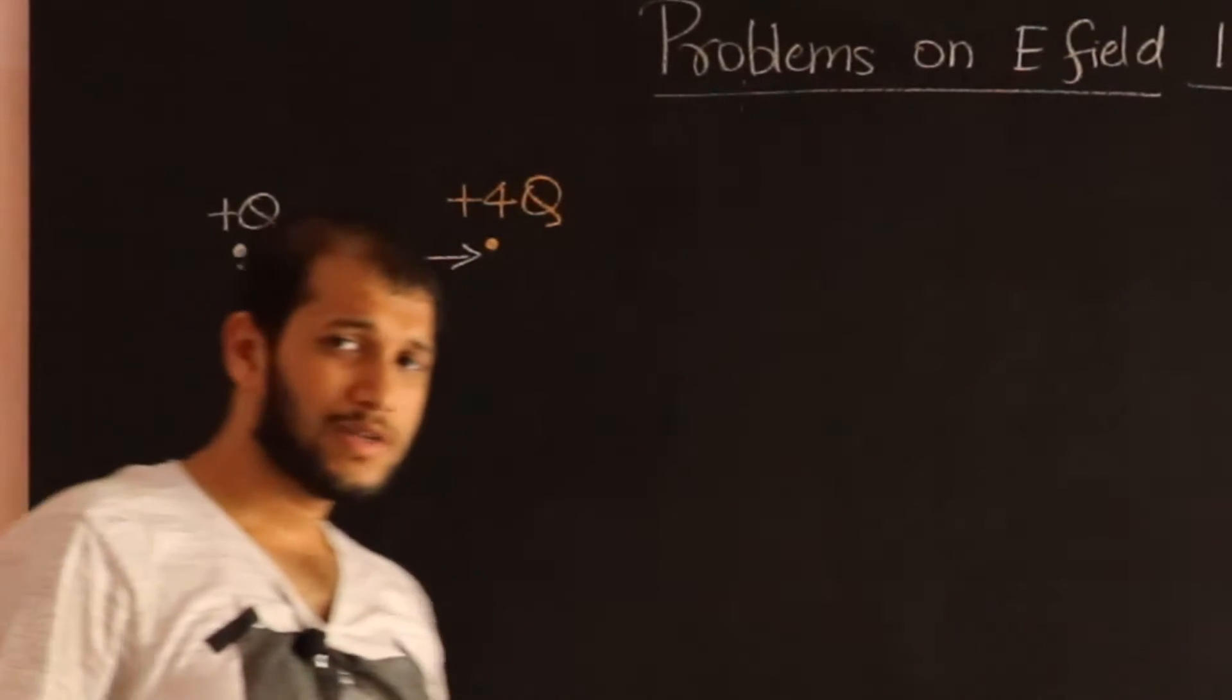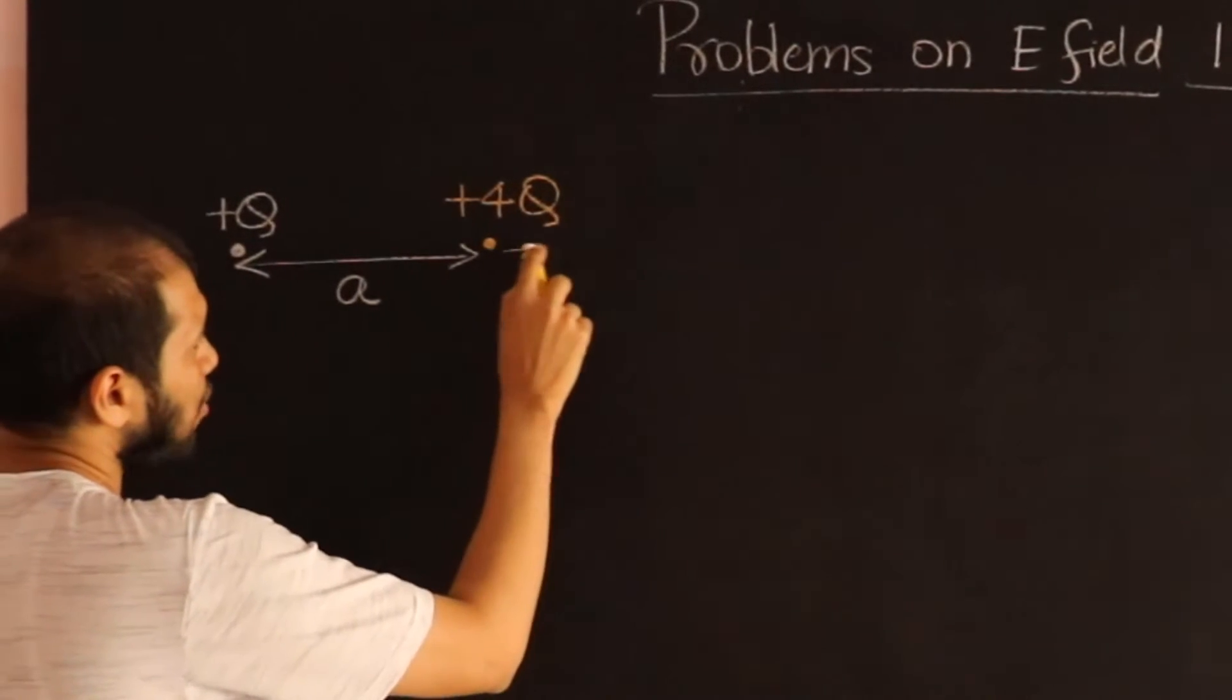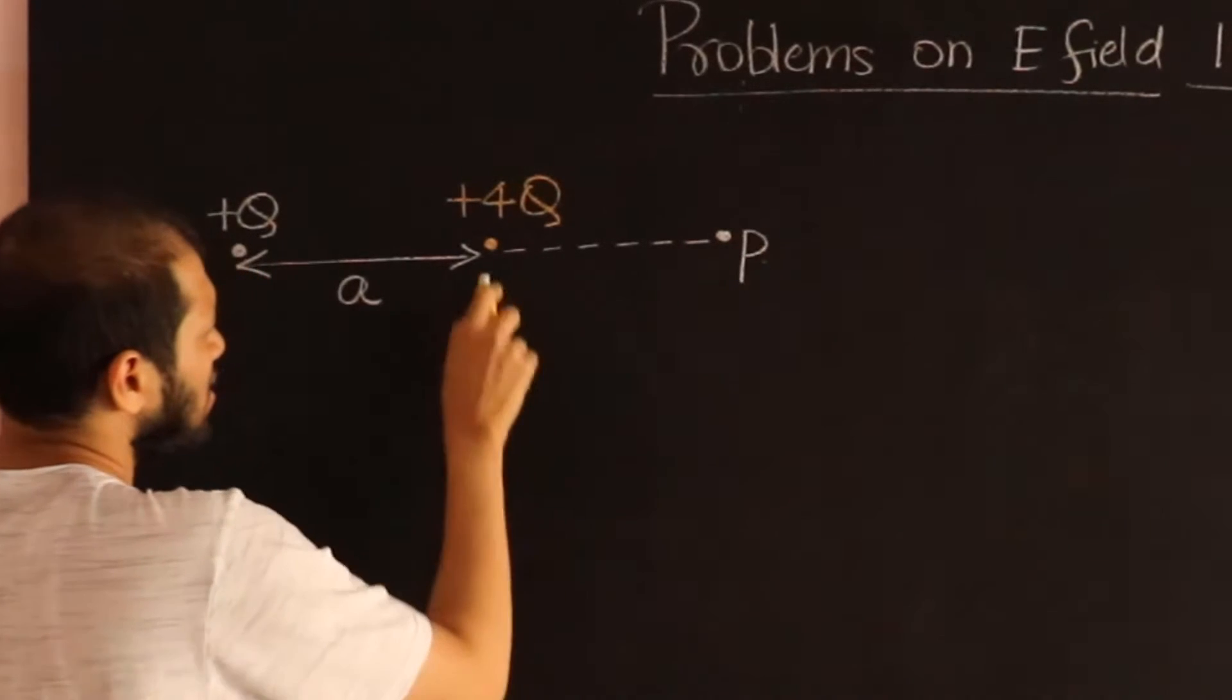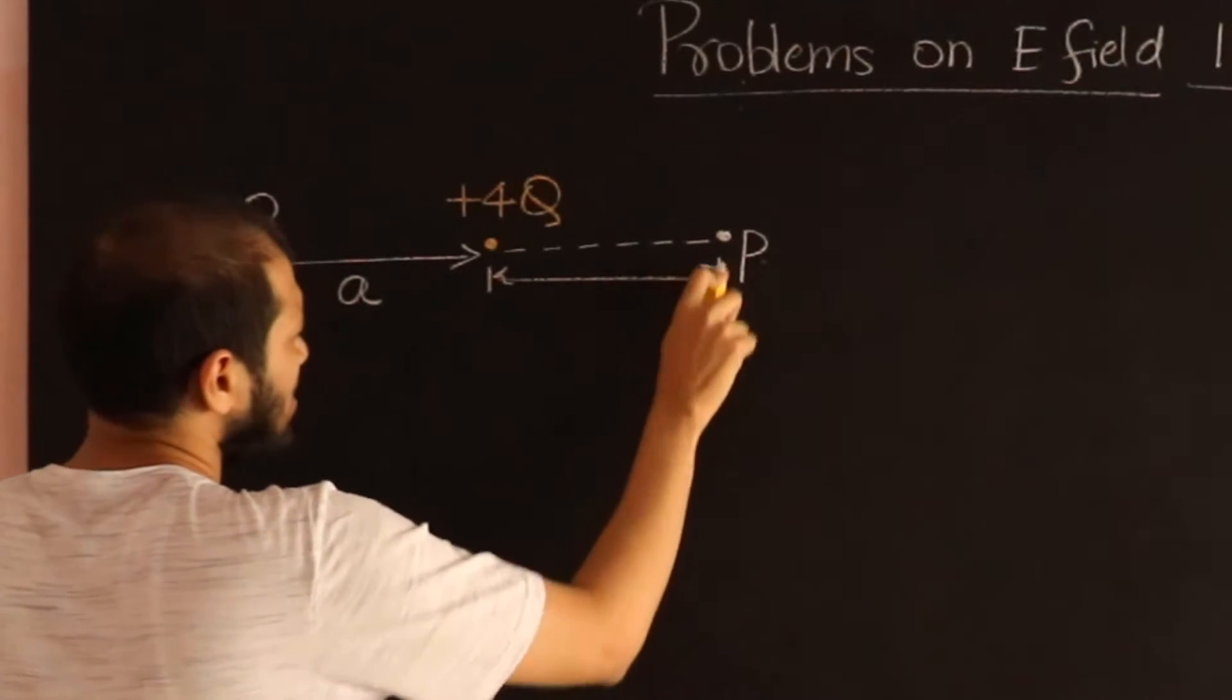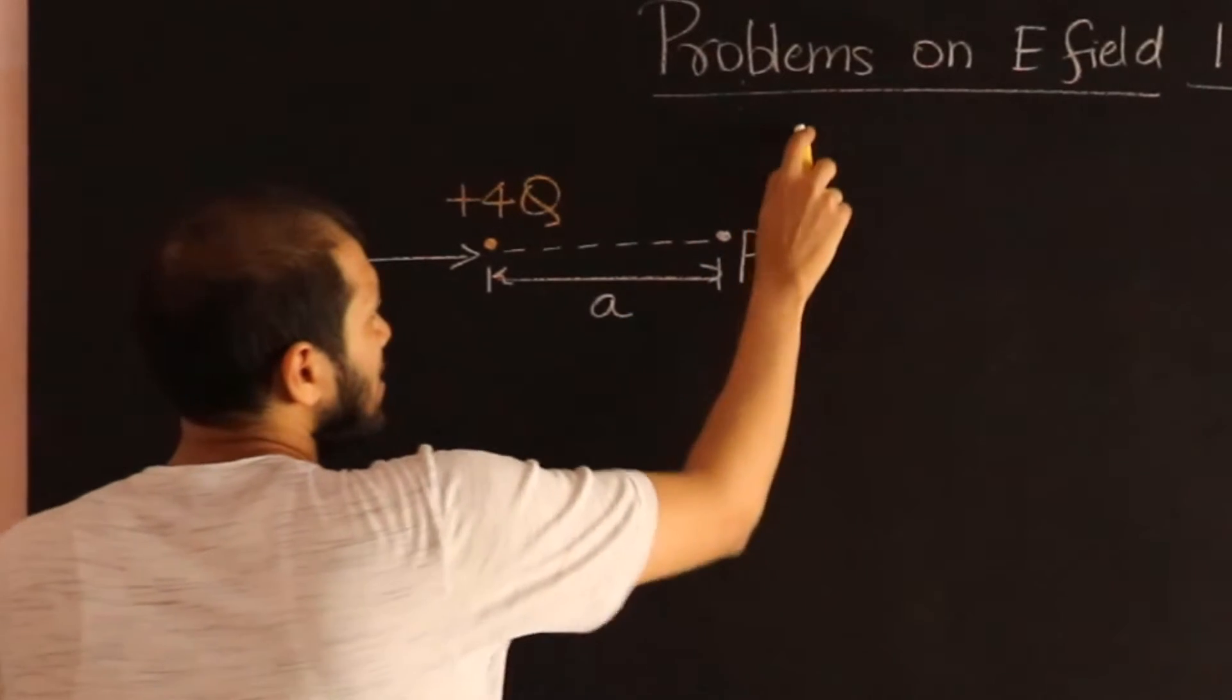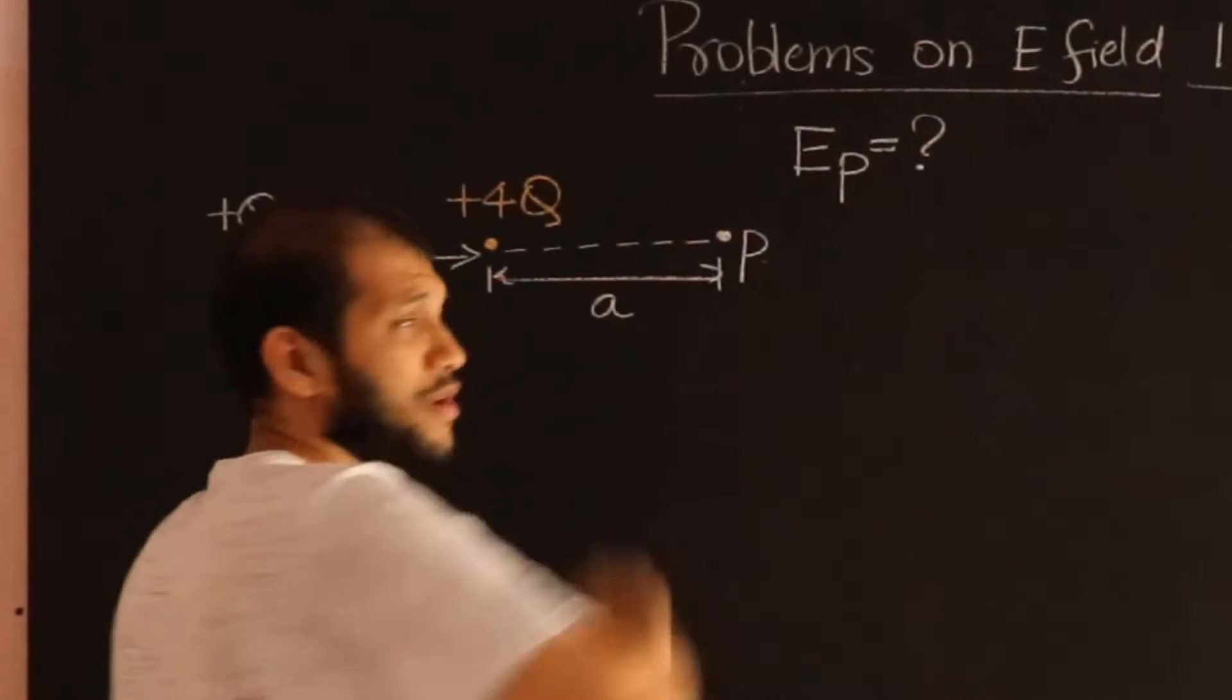My question is, what is the strength of the electric field at this point P, which is also at a distance A? I need to calculate the electric field strength at point P.